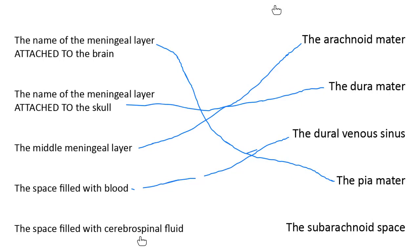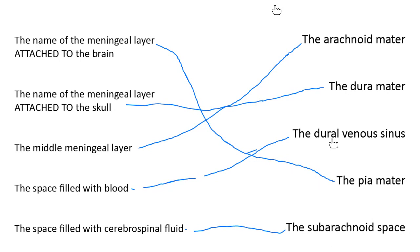We also have a space between the meninges filled with cerebrospinal fluid, which is a protective fluid that circulates around the brain. This space — the one that has CSF in it — is the subarachnoid space. Make sure we know the difference: the dural venous sinus contains blood, and the subarachnoid space contains cerebrospinal fluid.